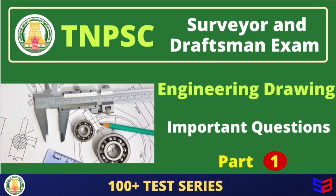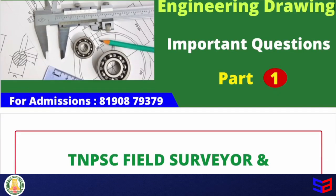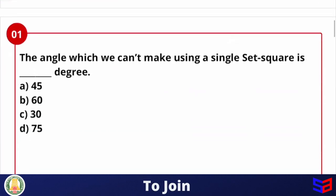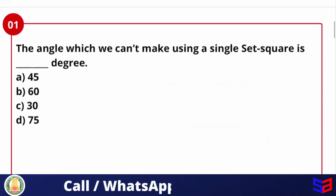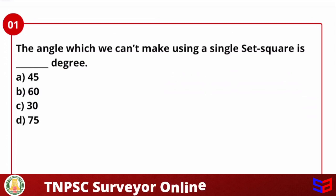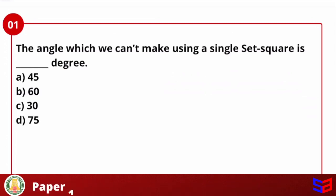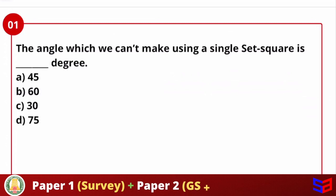Details will be found on the screen. Let's move on to the first question. The angle which we can't make using a single set square is how many degrees? A set square usually uses 30 degree, 60 degree, and 90 degree. We have two types of set square.